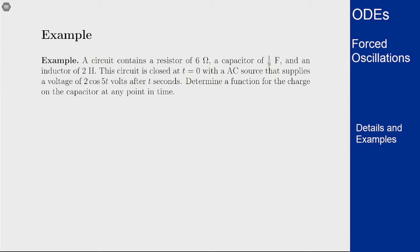In this example we want to solve a forced oscillation problem involving an RLC circuit. A circuit contains a resistor of 6 ohms, a capacitor of 1/9 farad, and an inductor of 2 henrys. The circuit is closed at time t equals zero with an AC source that supplies a voltage of 2 cosine 5t volts after t seconds to determine a function for the charge of the capacitor at any point in time.